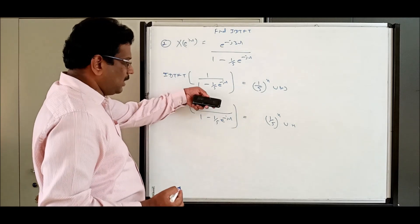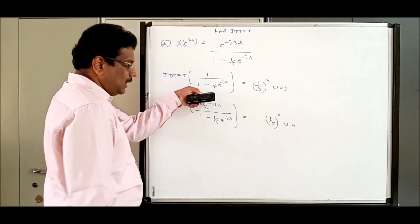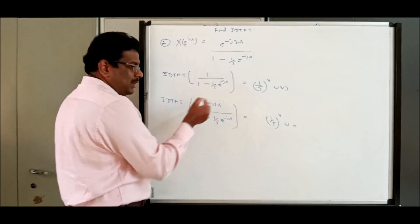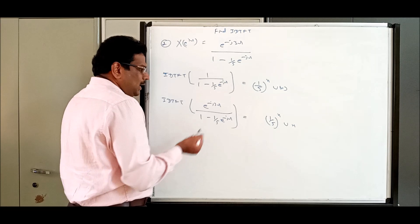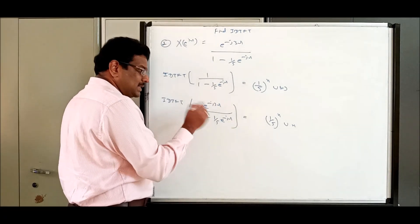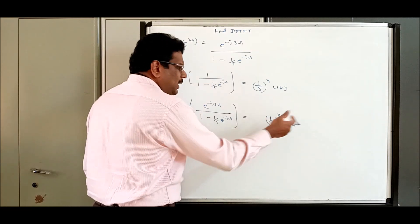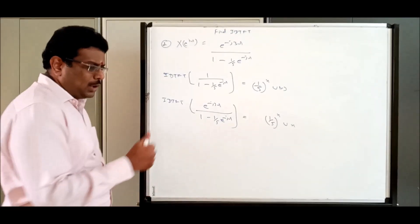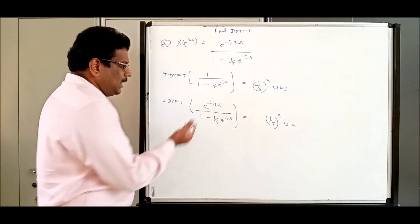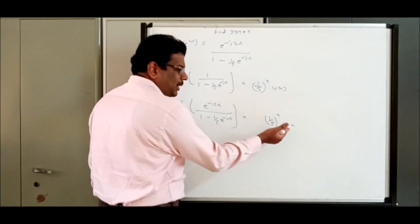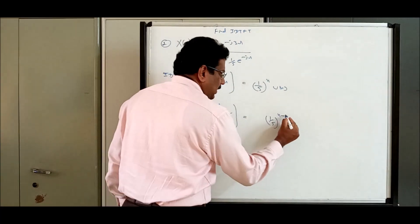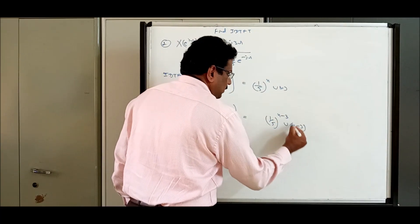If there is an extra e^(-jω) term in the numerator, be careful. In time domain shifting, in frequency domain we get e^(j). In frequency domain shifting, in time domain we get e^(j). In one domain e^(j) means the other domain has a shift. So if there is e^(-j·3ω), that corresponds to a time shift of minus 3.